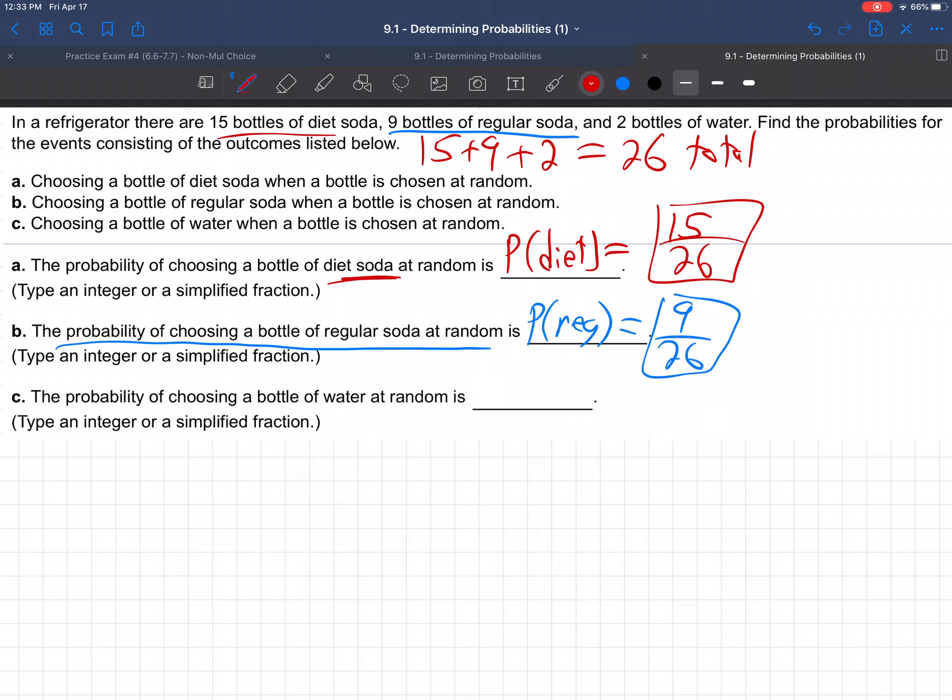And then the third one is, what's the probability of water? So the probability of getting water, well, there's two waters out of 26.